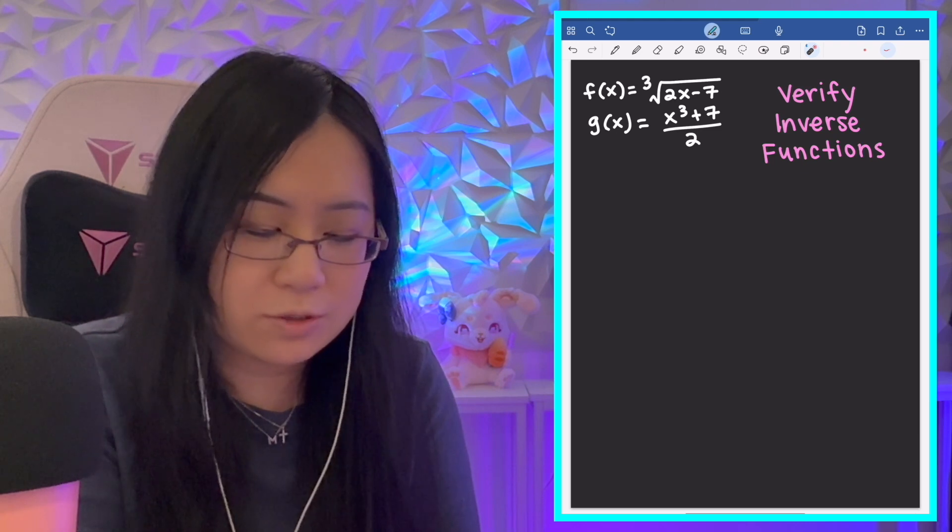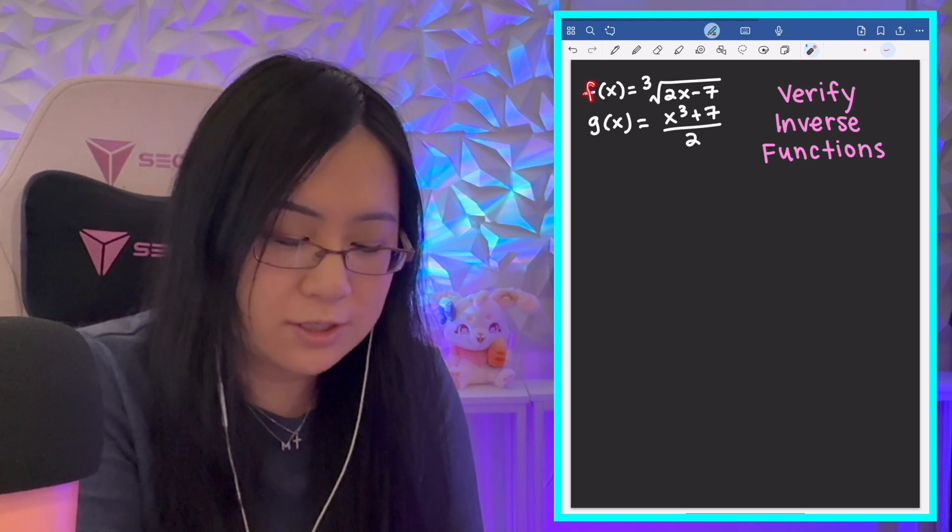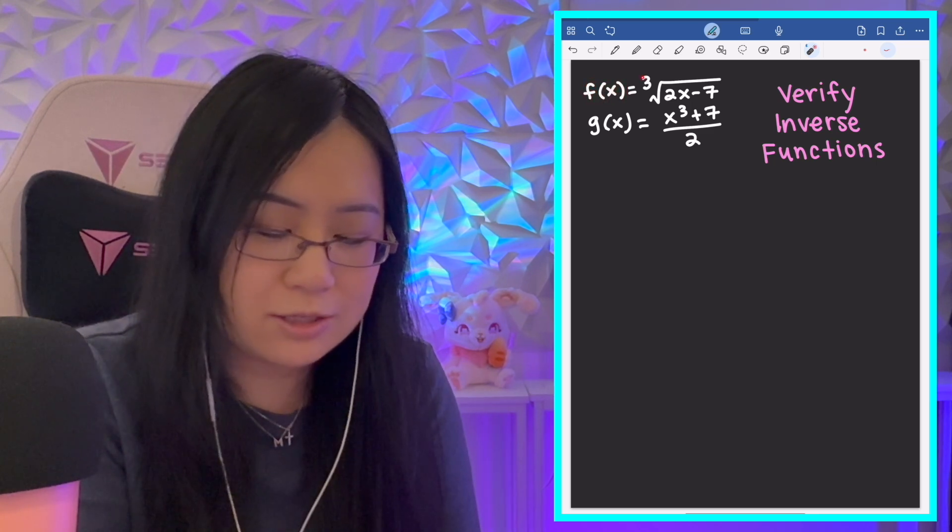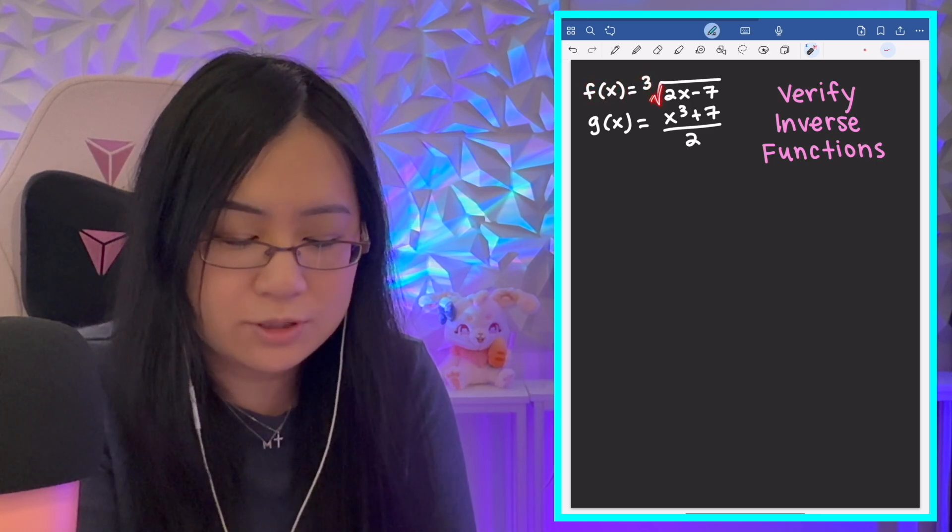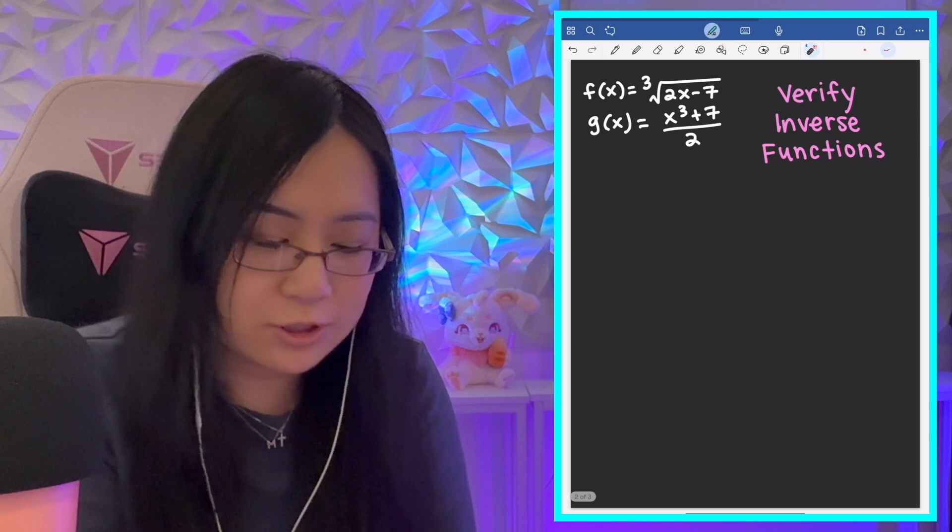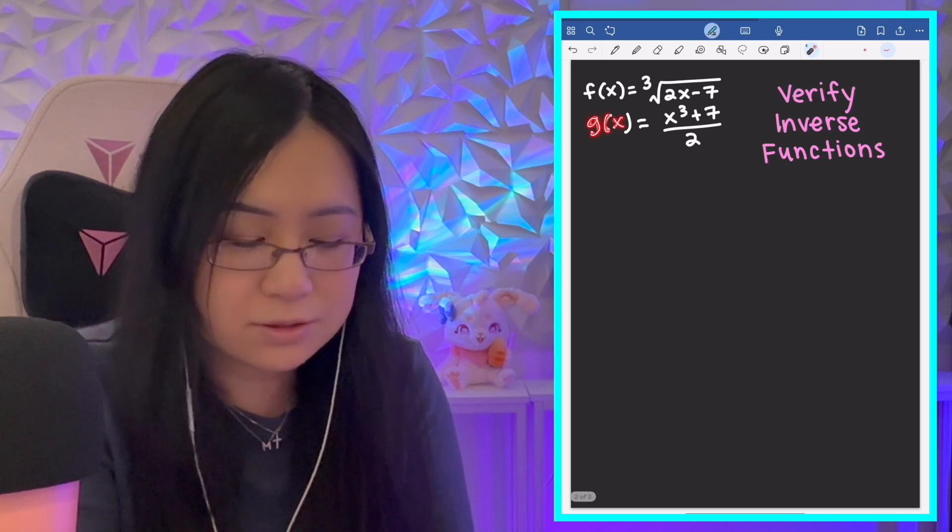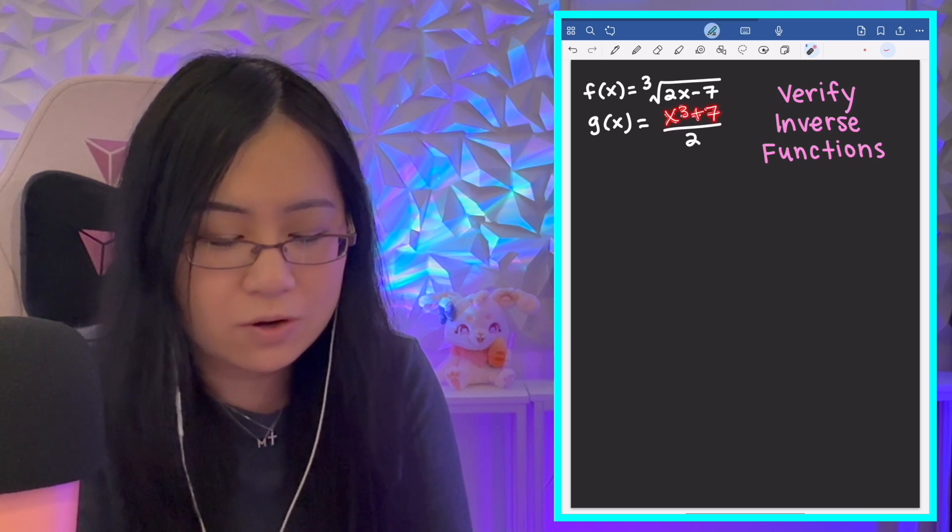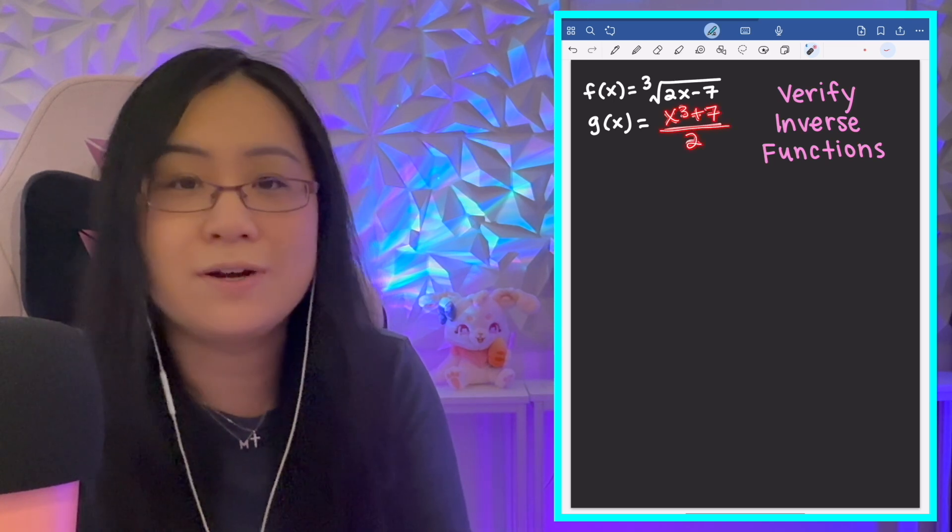So, here we have two functions. One is f(x), and f(x) is the cube root of 2x minus 7. And the other function is g(x), which is x cubed plus 7, all over 2.